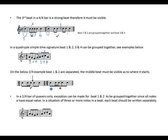A quaver plus two semiquavers gives you beat 1, so you can separate it there. Then two quavers also give you one beat — that would be beat 1, and then the next group would be beat 2. The correct grouping separates these beats clearly, while the incorrect grouping merges them.